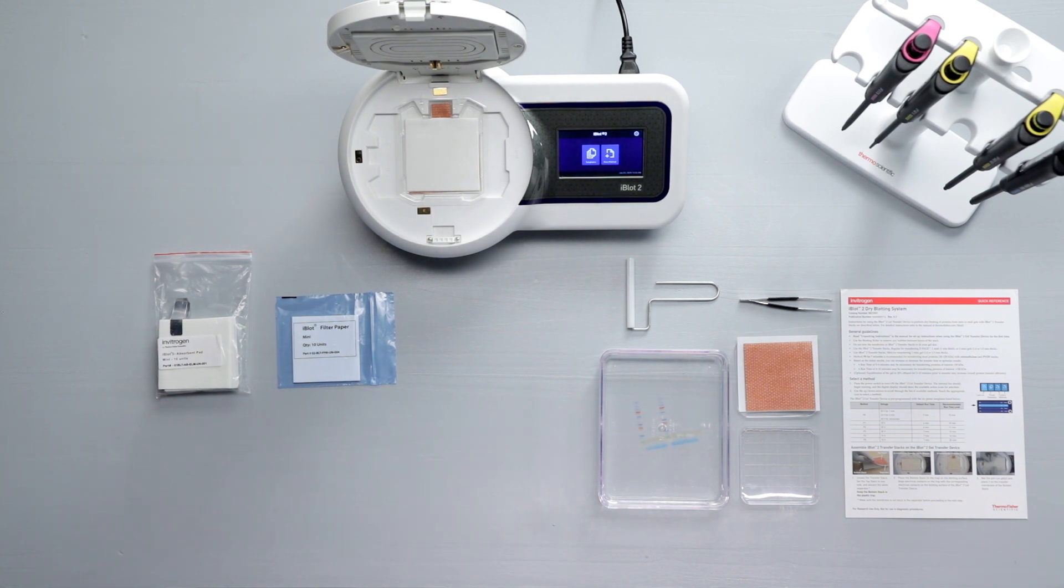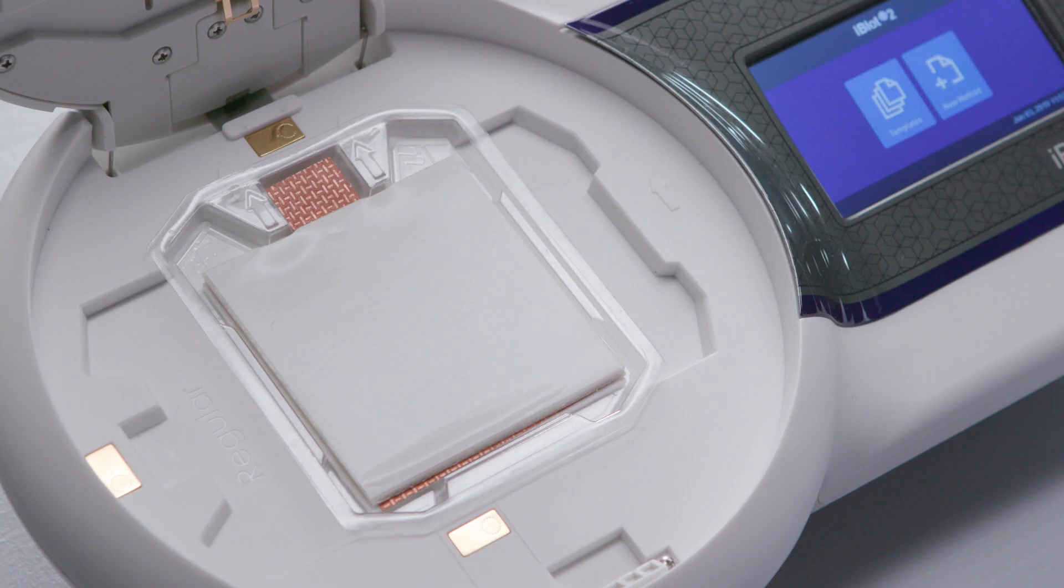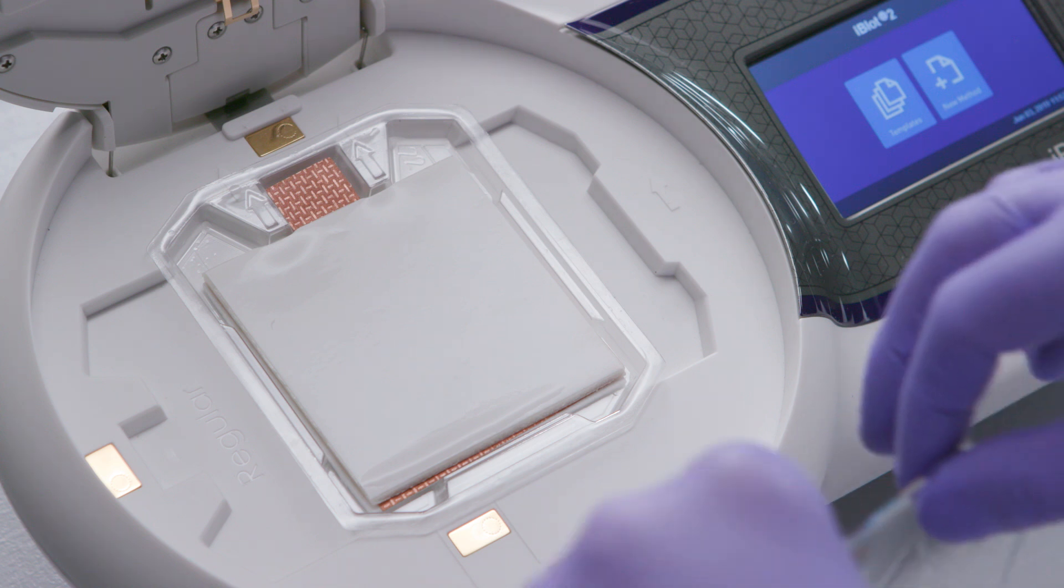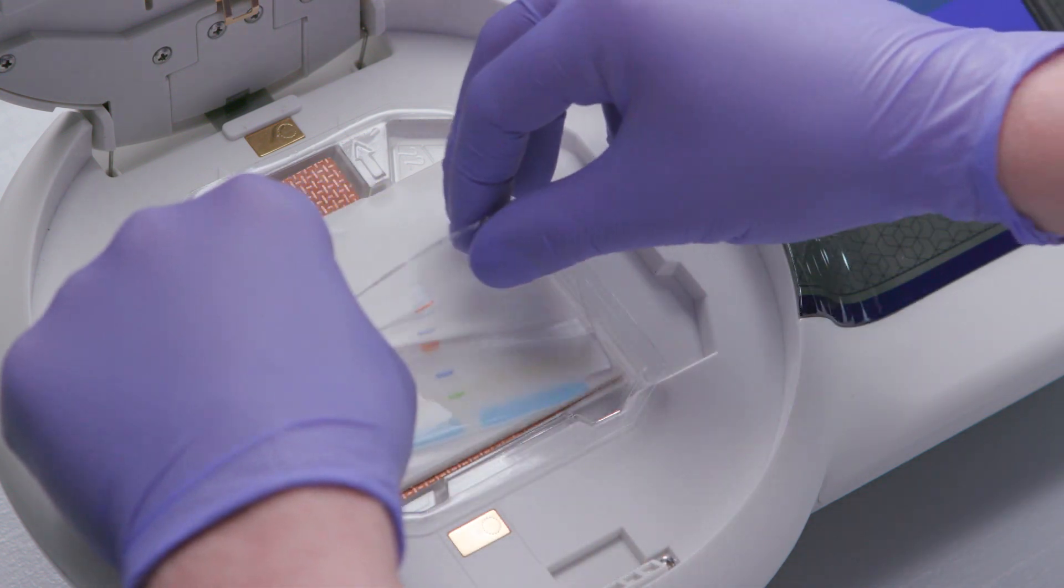Place the tray on the blotting surface of the iBlot2. Be sure to align the electrical contacts on the tray with the corresponding contacts on the blotting surface. Next, pick up your pre-run gel and place it on the membrane.